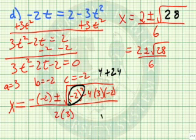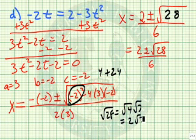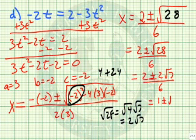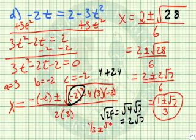The square root of 28 can be written as the square root of 4 times the square root of 7, which gives us 2 times the square root of 7. Therefore, we can write 2 plus or minus 2 times the square root of 7, all over 6. We can factor 2 out of both numerator terms: 1 plus or minus the square root of 7, all over 3. We could also write this as one-third plus or minus the square root of 7 over 6. Either form is acceptable.